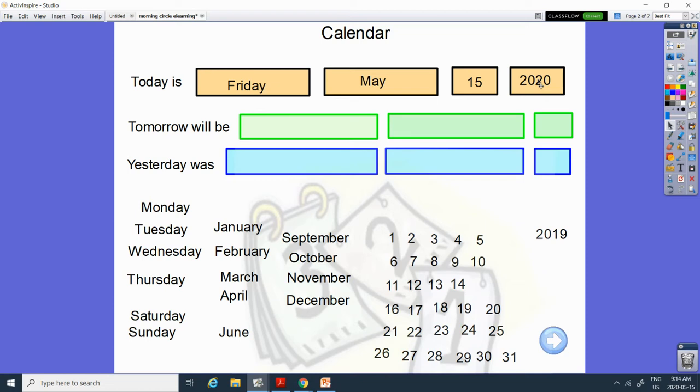Tomorrow will be what day? What comes after Friday? Monday, Tuesday, Wednesday, Thursday, Friday, and then Saturday.